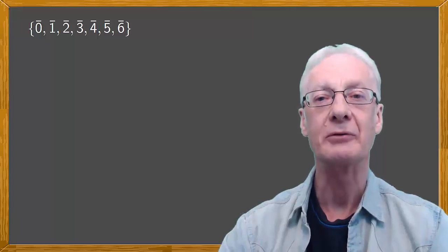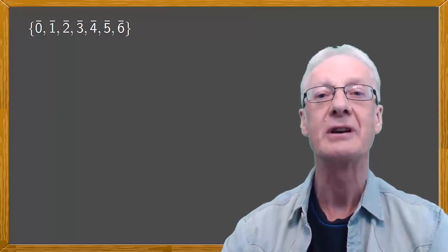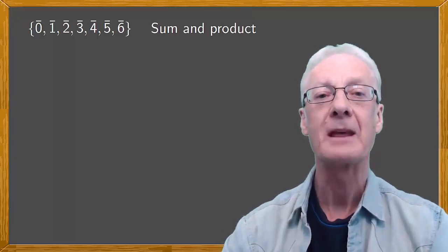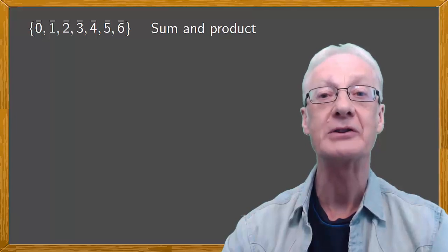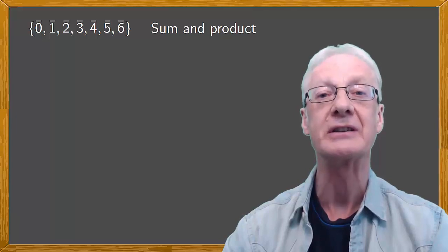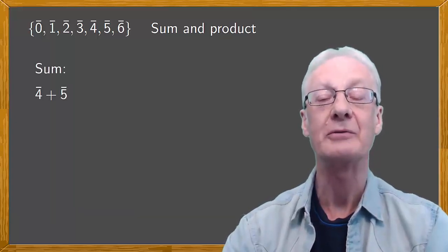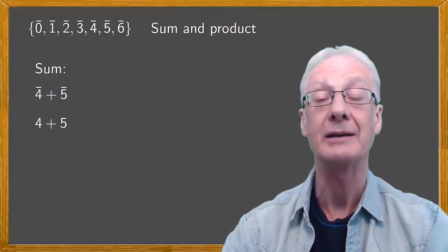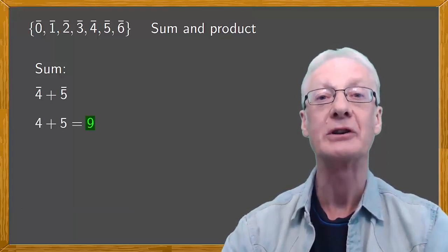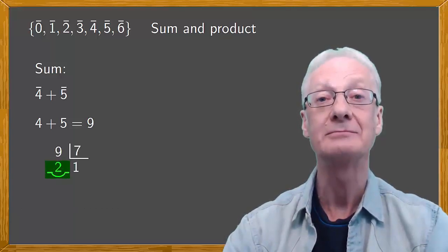Now, still thinking about modular arithmetic applied to the days of the week, let's define two operations, the sum and the product. We first carry out these operations in the usual way, but once we have the result, we reduce it modulo seven. In other words, we divide by seven and consider only the remainder. For example, if we have four plus five, we start by adding them in the usual way to get nine. Then we reduce modulo seven to arrive at the result, namely the remainder, which is two.